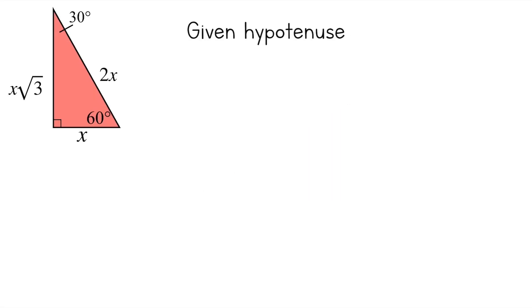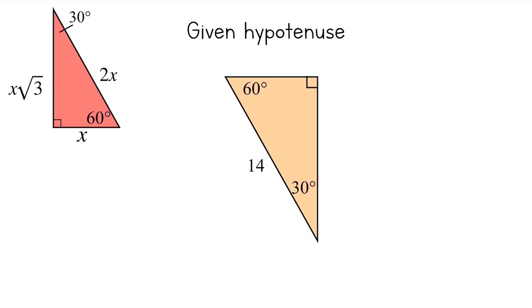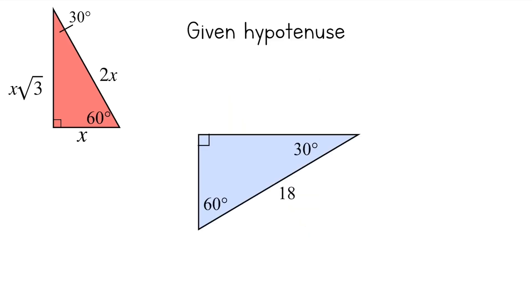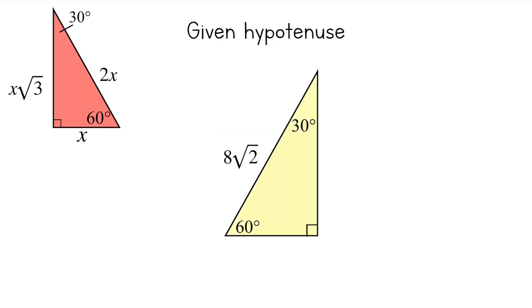What if we're given the hypotenuse? The easiest approach is to find the shortest leg first. If the hypotenuse is 14, the shorter leg is 7, and the longer leg is 7 root 3. If the hypotenuse is 18, the shorter leg is 9, and the longer leg is 9 root 3. If the hypotenuse is 8 root 2, the shorter leg is 4 root 2, and the longer leg is 4 root 2 times root 3, which gives 4 root 6.